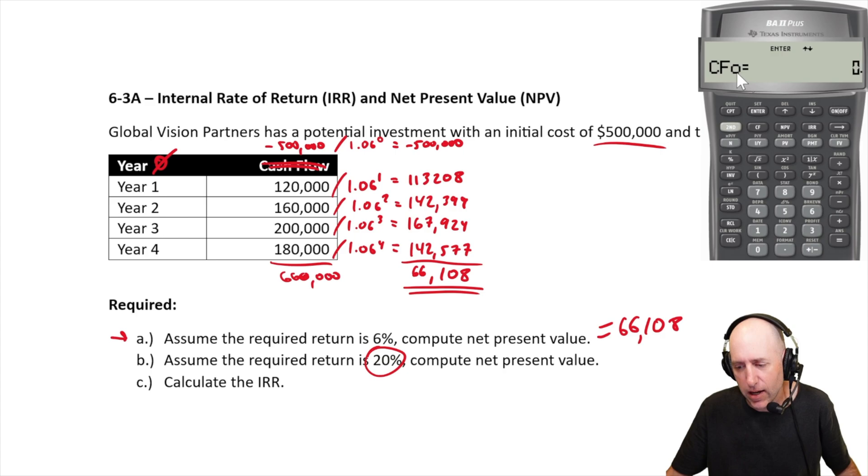So, CF. So, this is CF at time 0. What is my cash flow at time 0? It's negative 500,000. So, I just put in 500,000 negative. I hit enter. And then I hit the down. This is sort of telling you, like, what you can do here. So, there's enter, and then there's up and down. So, I hit the down arrow.